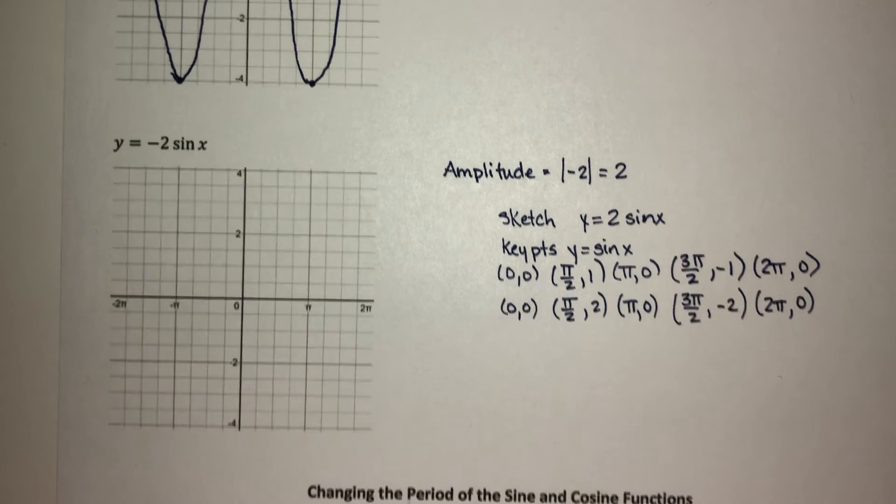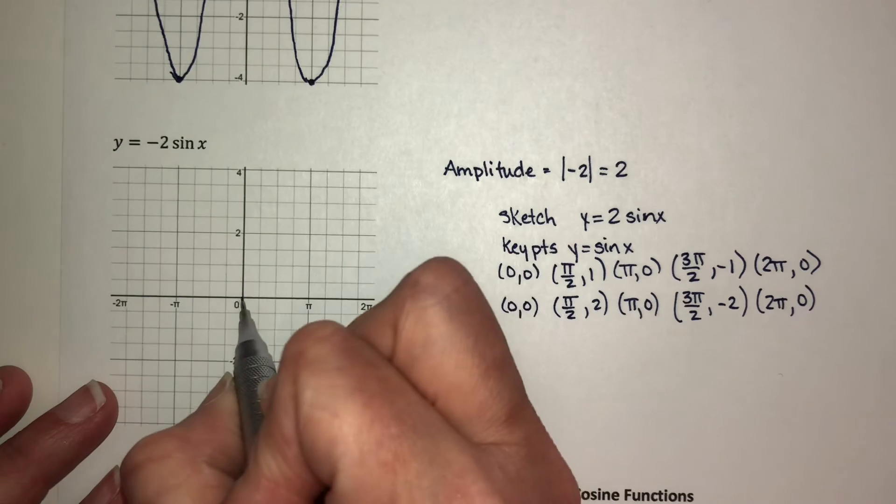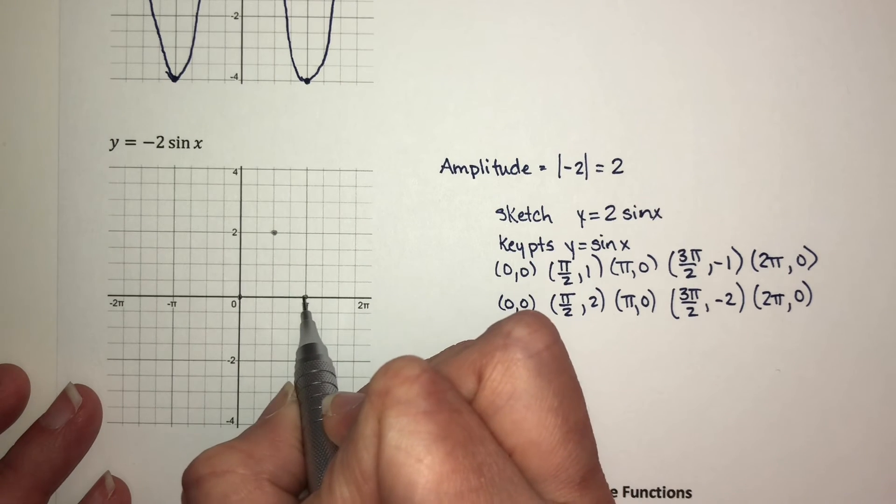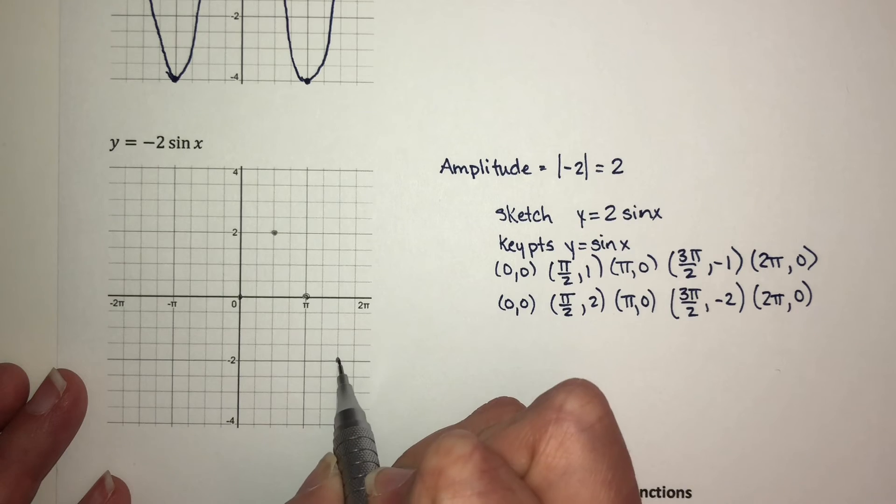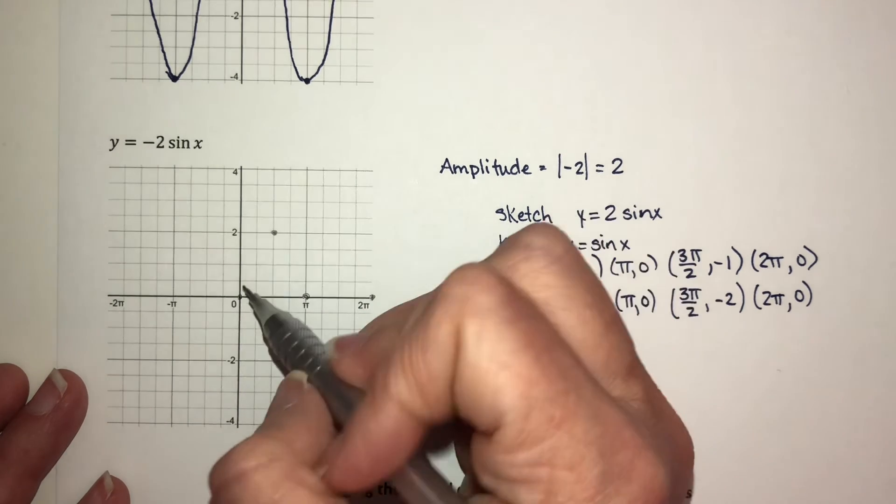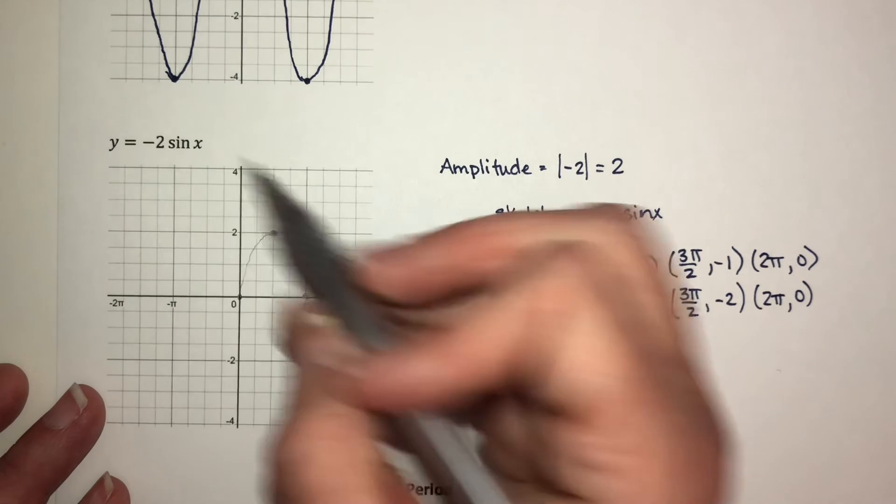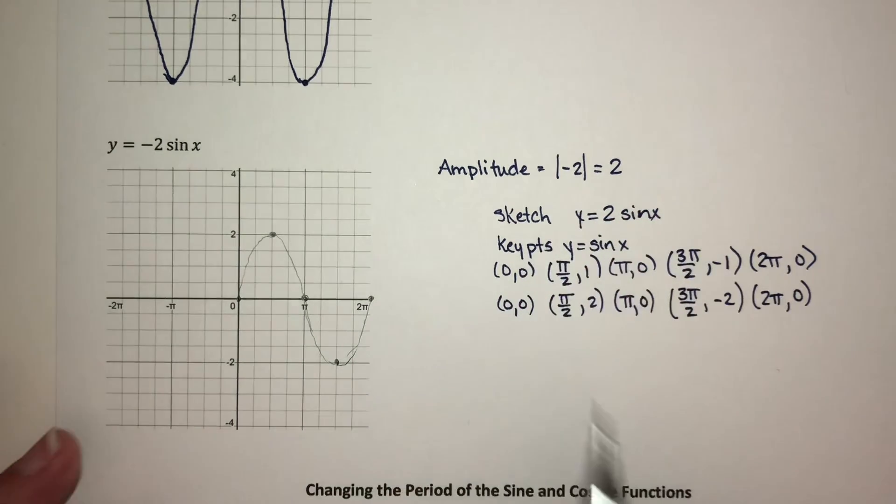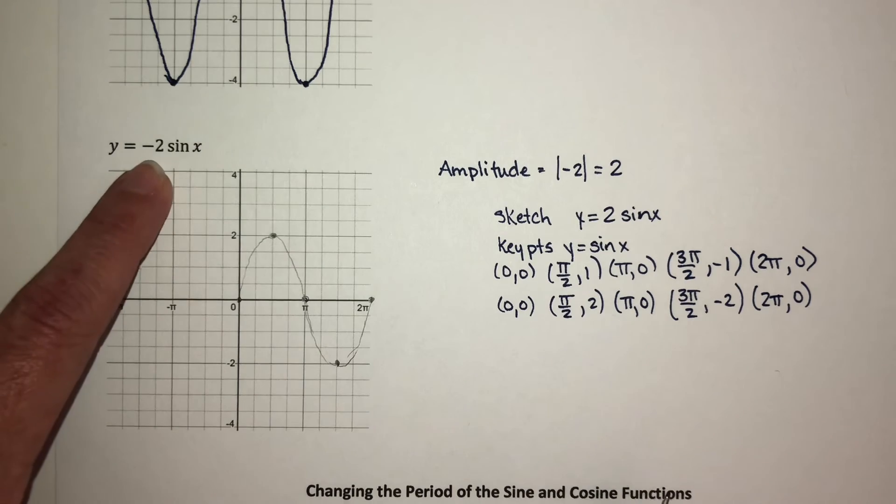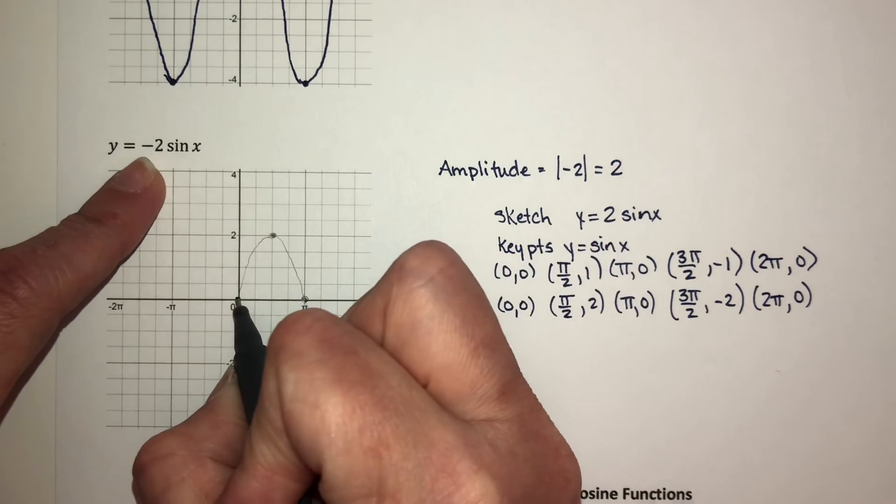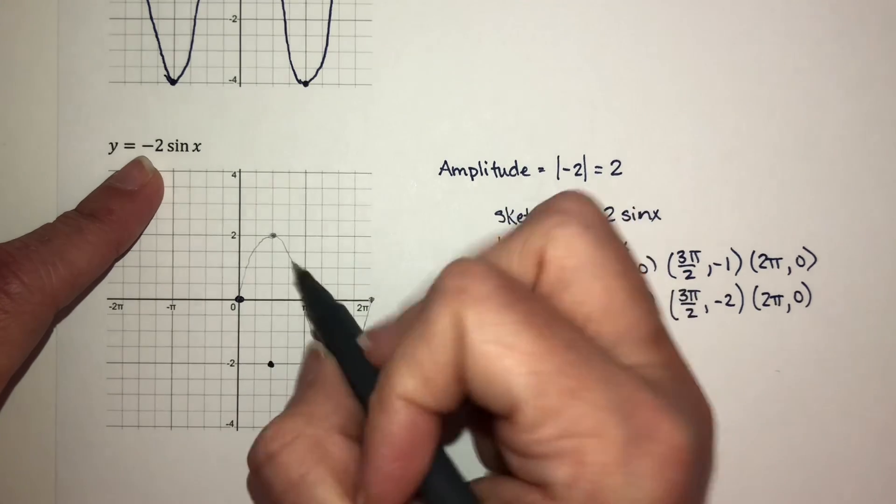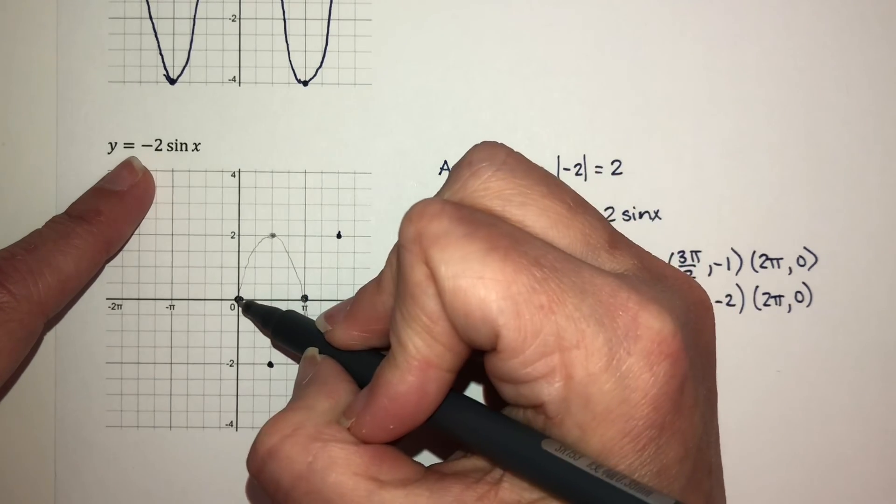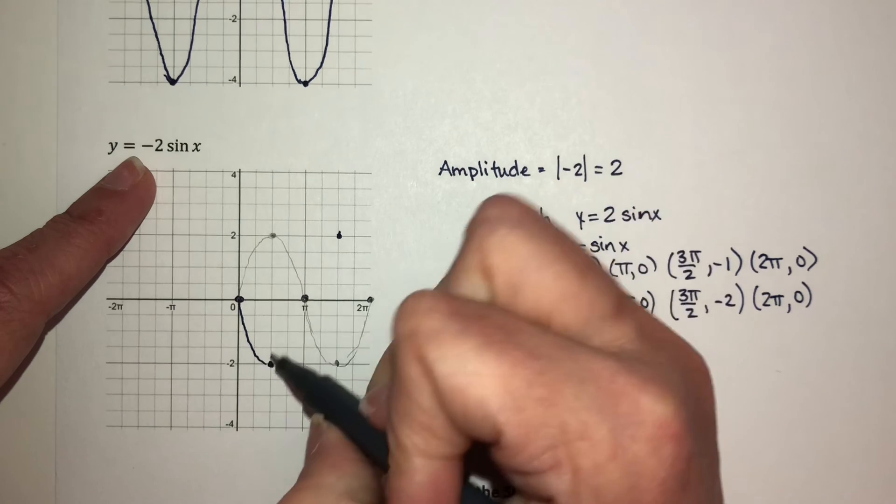If I plot these points, you have (π/2, 2), (3π/2, -2), and then right here. So that little graph for positive 2 in front would look something like this. Now since we're supposed to reflect it over the x-axis, go ahead and do that for all of these points. So this one's down here now. So this part will look something like this.